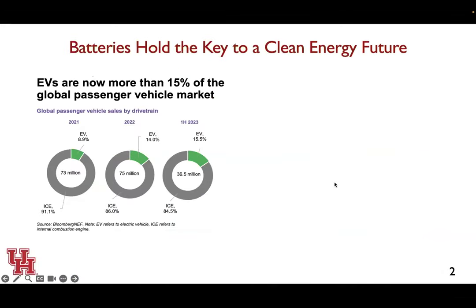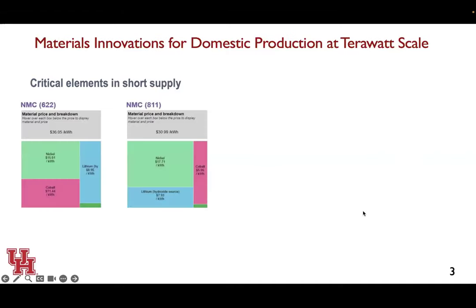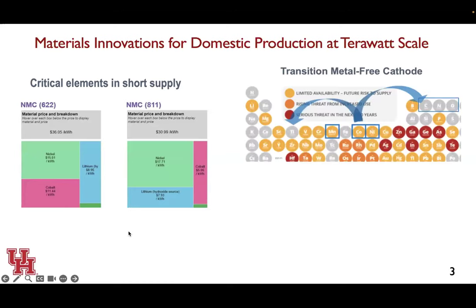Batteries are key to a clean energy future. Globally, more than 15% of passenger vehicles are EVs and this trend will continue. Last year, more than 40 million cars were sold globally. This really calls for terawatt-scale manufacturing. Current lithium-ion batteries rely on nickel and cobalt — critical elements that are in short supply. We've been thinking about moving from transition-metal-based oxide cathode materials to organic-based materials with only carbon, nitrogen, and oxygen as the key elements — what we call transition metal-free cathode materials.